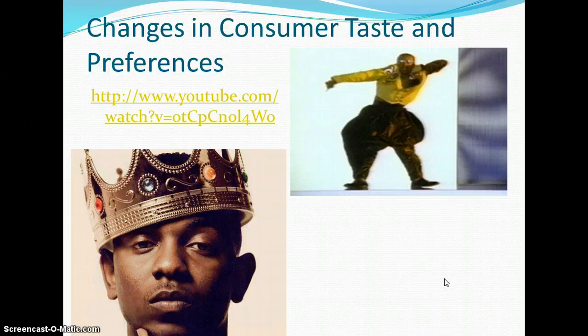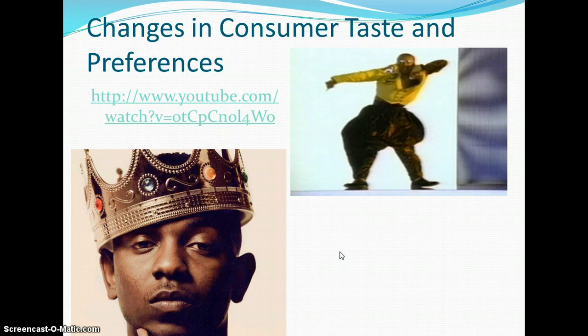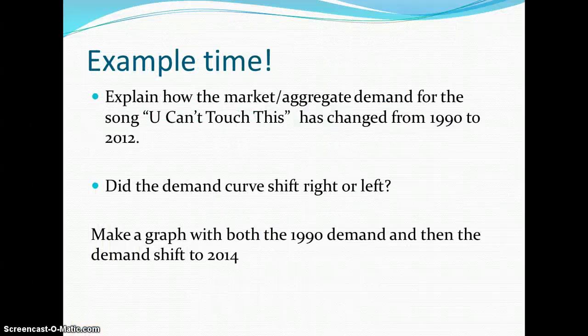Does that make sense? This would be a change in consumer taste and preferences — a change in style. We see that styles have changed and this changes demand. Demand for Kendrick Lamar has shifted to the right; demand for MC Hammer way to the left. He had to sell everything pretty much — he went bankrupt. Just like almost all NFL players three to five years after they retire.